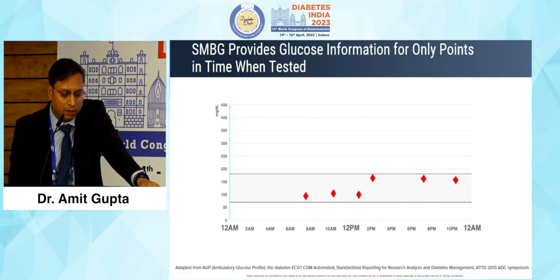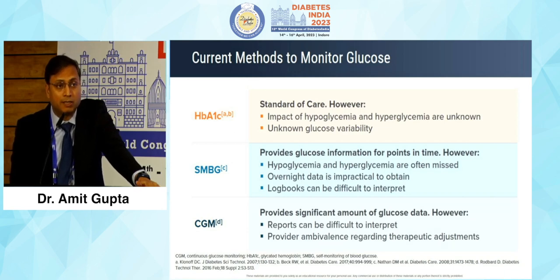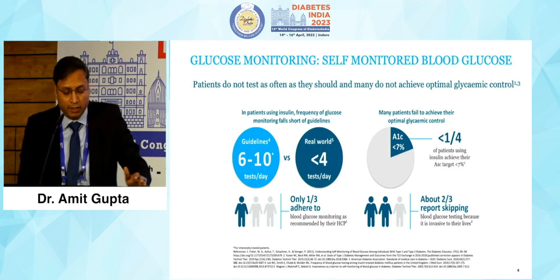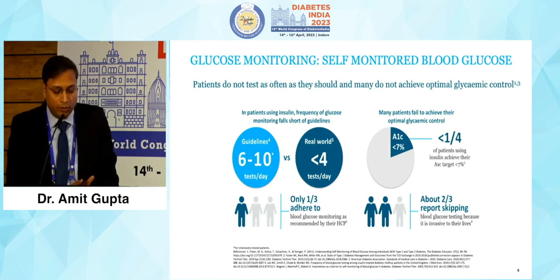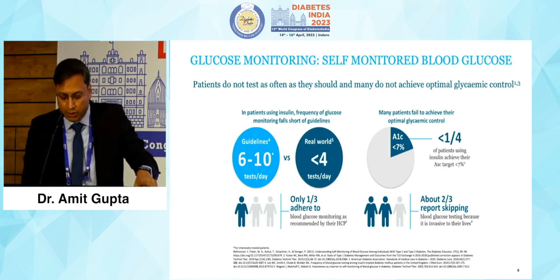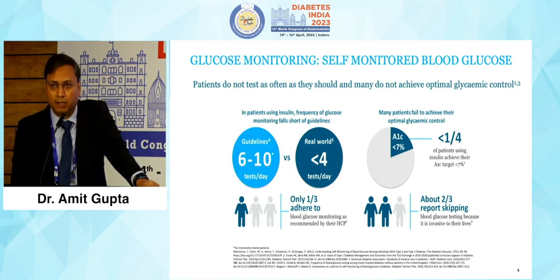CGM provides a significant amount of glucose data; however, reports can sometimes be difficult to interpret and there is provider ambivalence regarding therapeutic adjustments. Despite self-monitoring of blood glucose, almost 70% of people with diabetes do not have adequate HbA1c control.